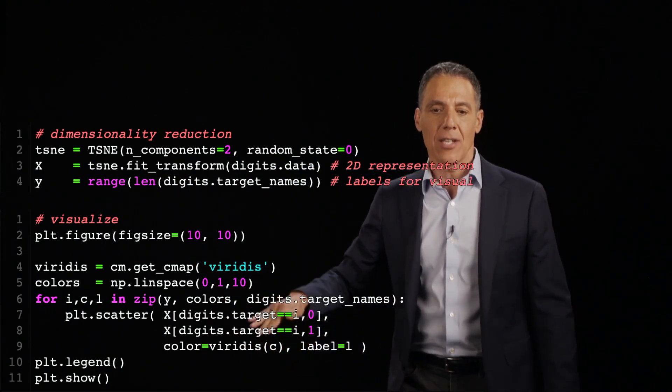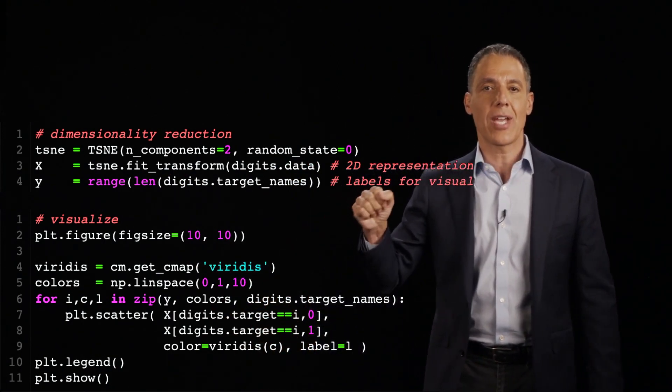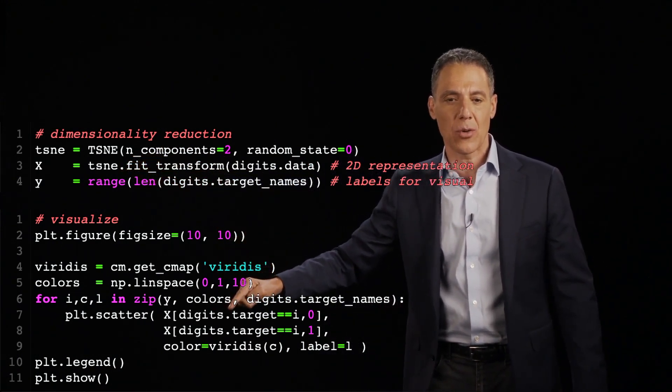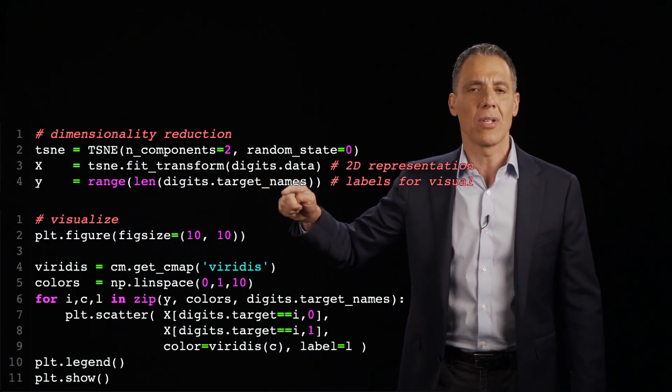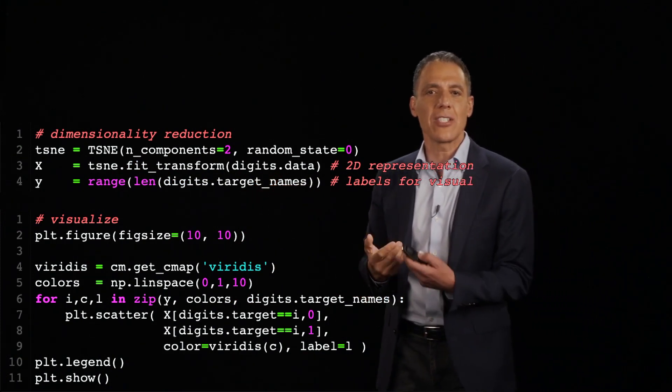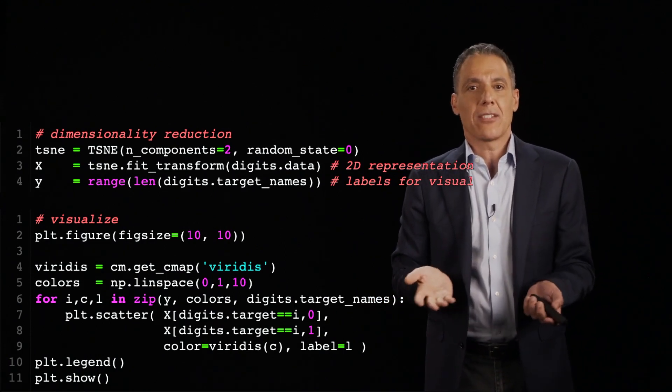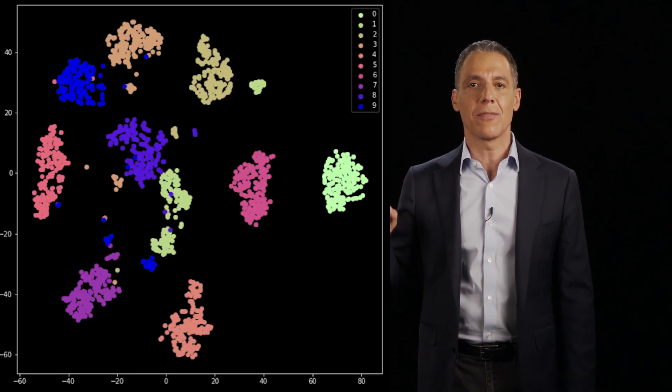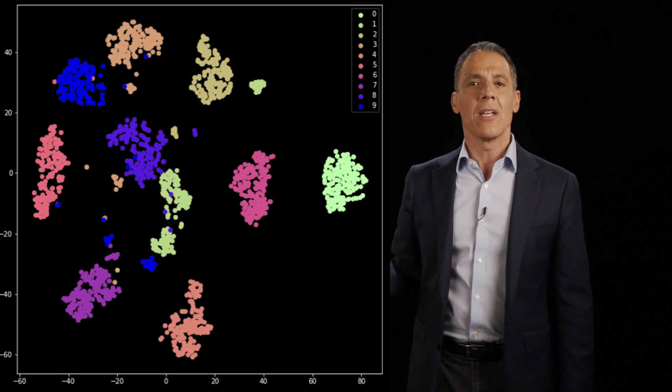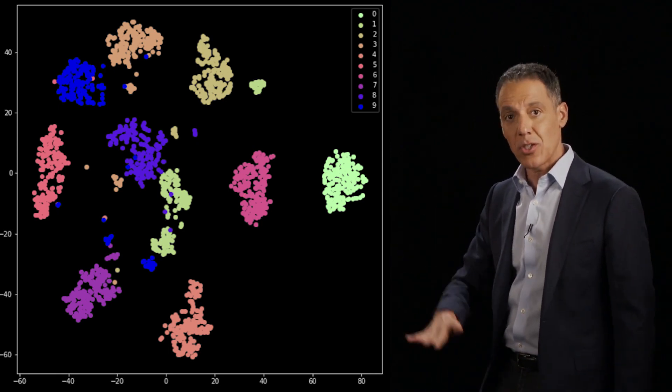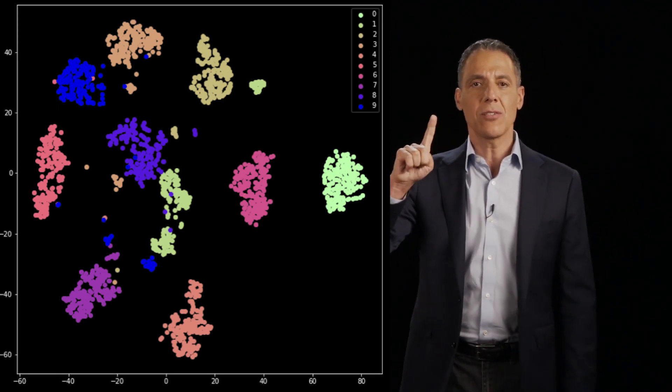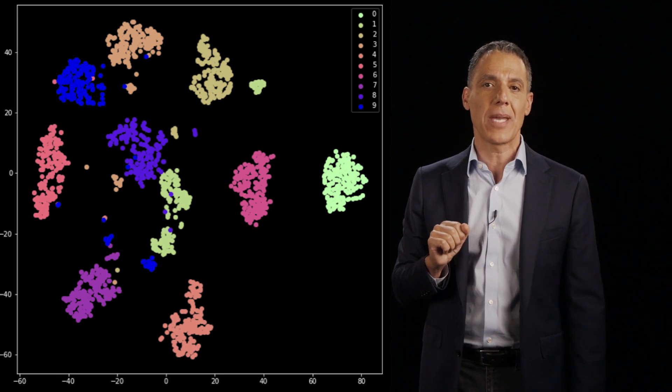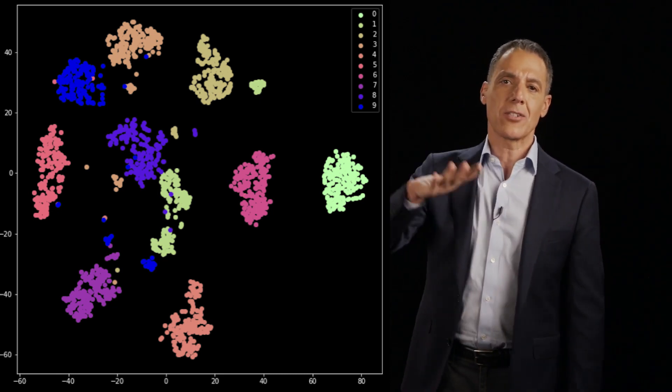And now what I'm going to do is just plot this two dimensional representation in X with a color coding. So this little guy right here is going to color code everything based on the known label. So I'm cheating here a little bit. Obviously, in unsupervised learning, I don't have labels. I'm going to color code them so that you can see that what TSNE does is a very nice job of clustering the data. So each data point here in this two dimensional space corresponds to a single digit, an image of a single digit, 0 through 9, in some high dimensional image pixel space. I've reduced the dimensionality using TSNE.